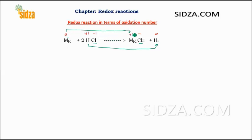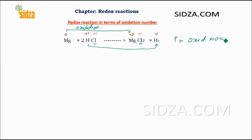Increase in oxidation number is called oxidation, so magnesium undergoes oxidation. Decrease in oxidation number refers to reduction.